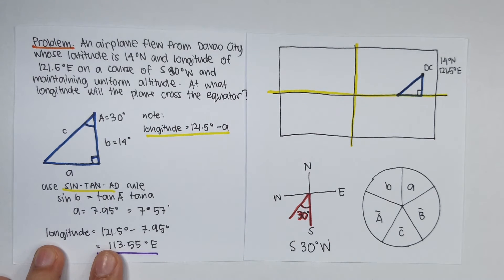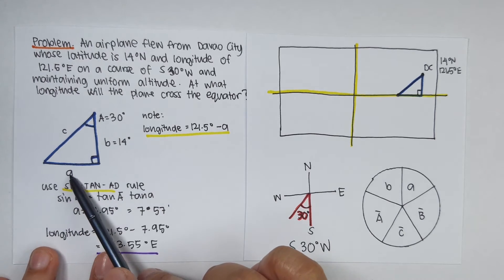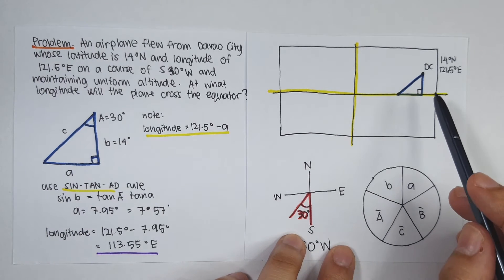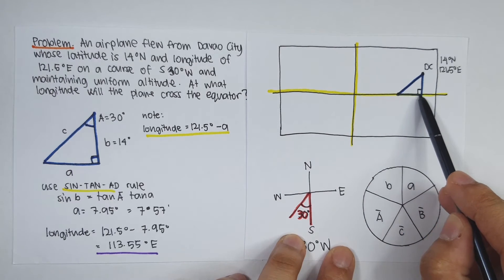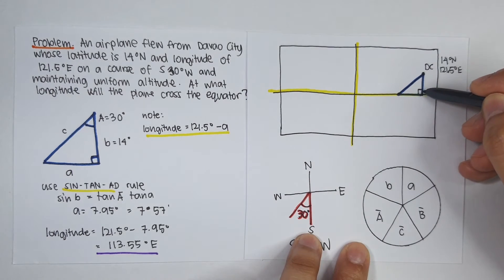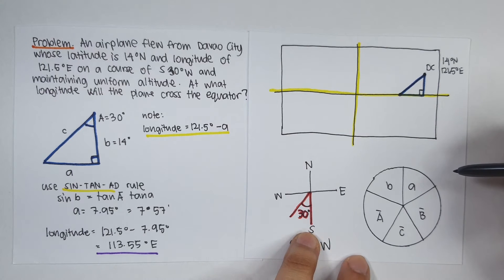So what we need to solve is this side A because our longitude is equal to 121.5 degrees minus A. And since this is a right spherical triangle, we can use the Napier's rule to solve for side A.